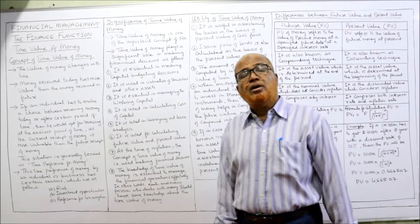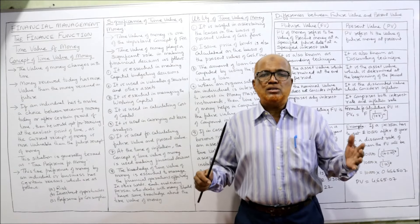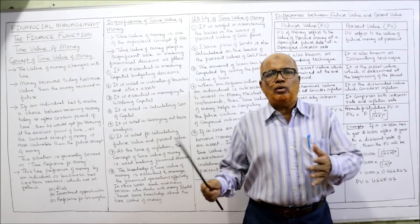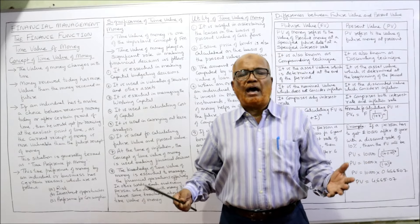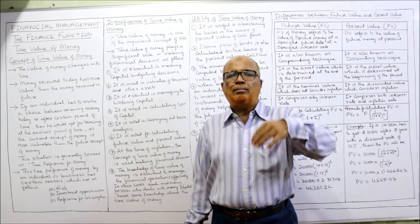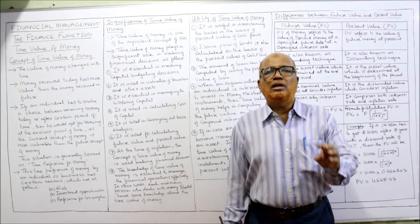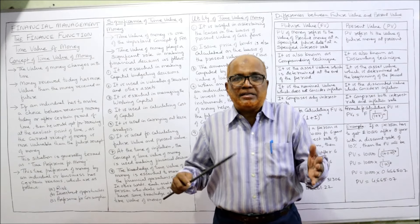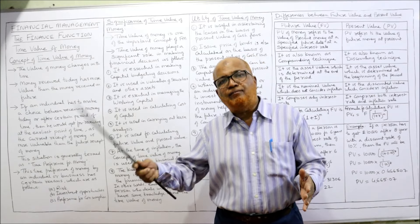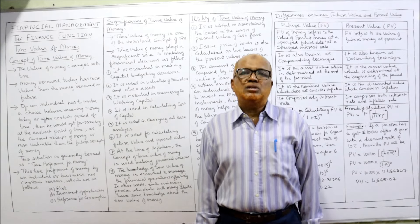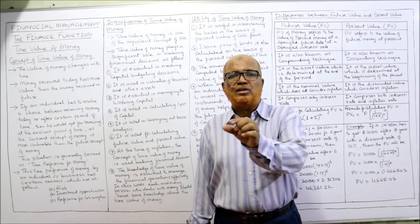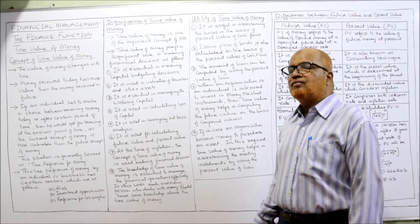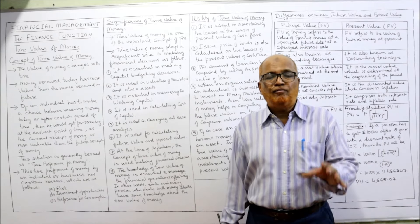Thirdly, preference for consumption. Normally people want to consume presently, not in future. For example, if you have money right now, you can buy a car and enjoy it. But if you have to get the money after five years, you have to wait five years to purchase a car. So people will prefer present consumption rather than future consumption. These are the three main reasons why there is a time preference for money.